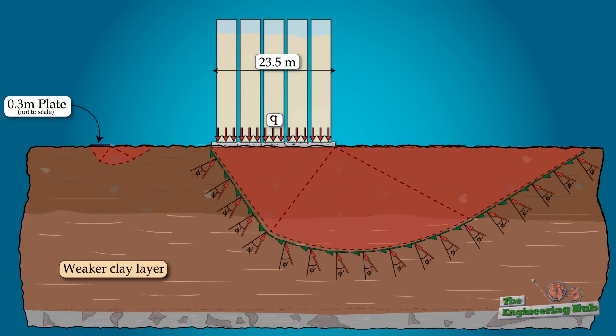Looking at the bearing failure plane, it is clear that a significant length of this plane is within the weaker layer, which had poor shear resistance.